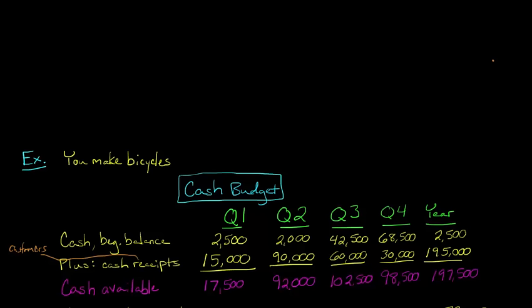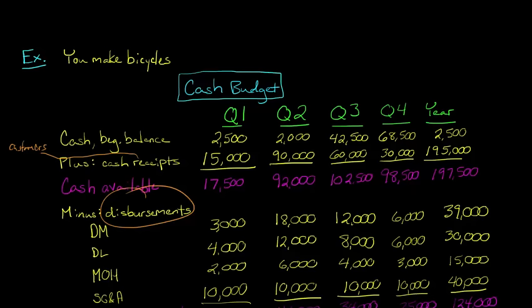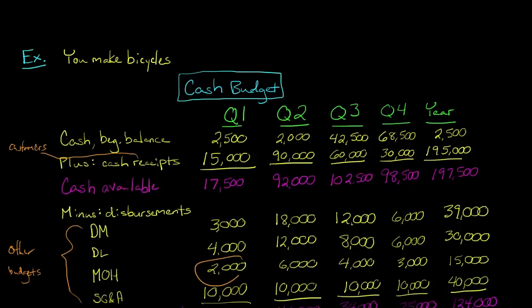Now, we're going to spend money to get direct materials to make those bicycles — that leads to our disbursements. All these disbursements are going to come from those other budgets. That's why we make the cash budget last. We look at the direct material budget: we've budgeted $3,000 in expenditures for quarter one. The direct labor budget: $4,000. The overhead budget says $2,000 for quarter one, and the SG&A budget says $10,000. We pull all these numbers from other budgets, and when we lump them together, we've got $19,000 in total disbursements.